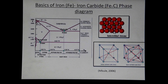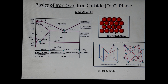Alpha ferrite has a crystal structure called body-centered cubic (BCC), which has very few interstitial positions for carbon to fill, giving it much less carbon solubility. Moving on, the alpha plus gamma two-phase region leads to the gamma region, also called austenite, which is face-centered cubic (FCC). FCC has much more interstitial positions, so the solubility of carbon in gamma is much higher — about 2.14 weight percent.